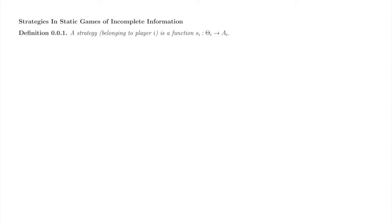This dynamic sleight of hand lets us carry our definition of strategies from dynamic games of complete information to static games of incomplete information. A strategy is a function from a player's type space to her action space. Each player observes her own type and then the static portion of the game commences. In other words, each type represents a move of its own. A player's strategy must be a complete plan for each of her moves, so a strategy must associate an action to each type. A player's strategy space is then the collection of all such functions.